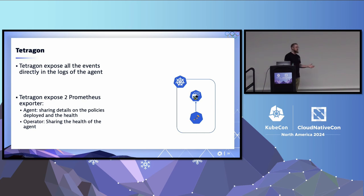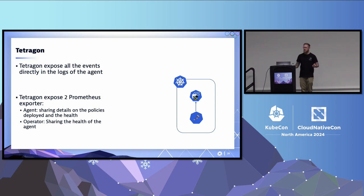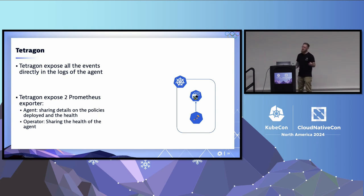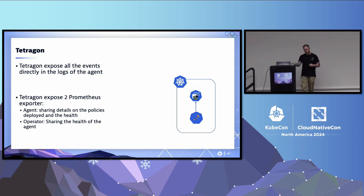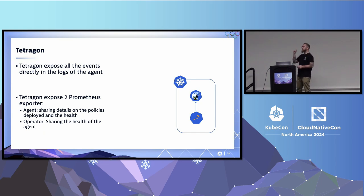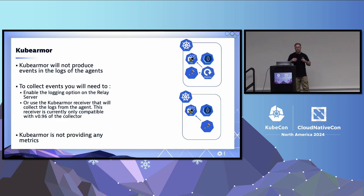Tetragon produces logs directly at the agent level, so you just read the logs from the agent to get everything. However, the events produced can be so long that some observability platforms drop them because they're very expensive. You'll need to reconfigure Tetragon to select only the fields you're really interested in. Throttling is also supported. When it comes to metrics, Tetragon is insane: it gives you metrics about the agents, the operator, and all deployed policies.